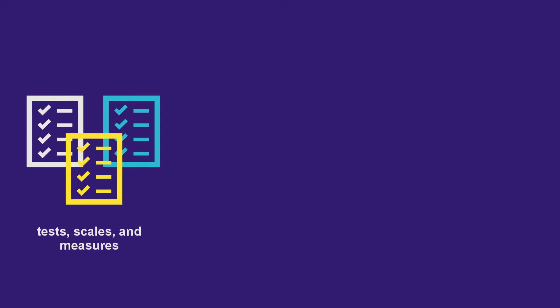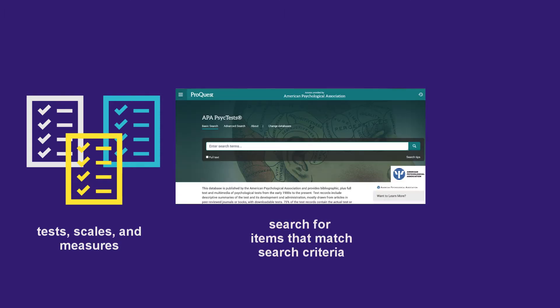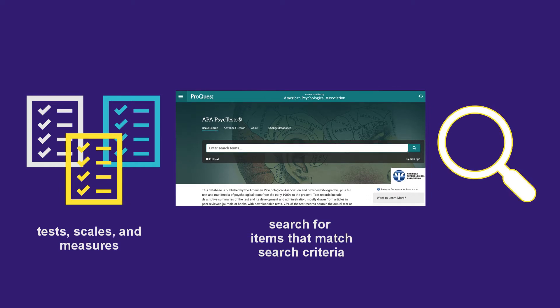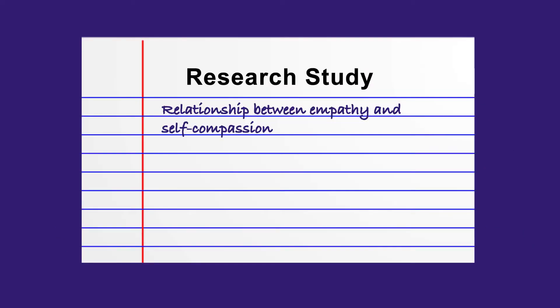APA PsychTest Indexing allows you to search for and discover tests and measures that match your search criteria. As a result, this database makes it possible to find tests that were previously lost in the literature and may be hard to discover using other research tools.